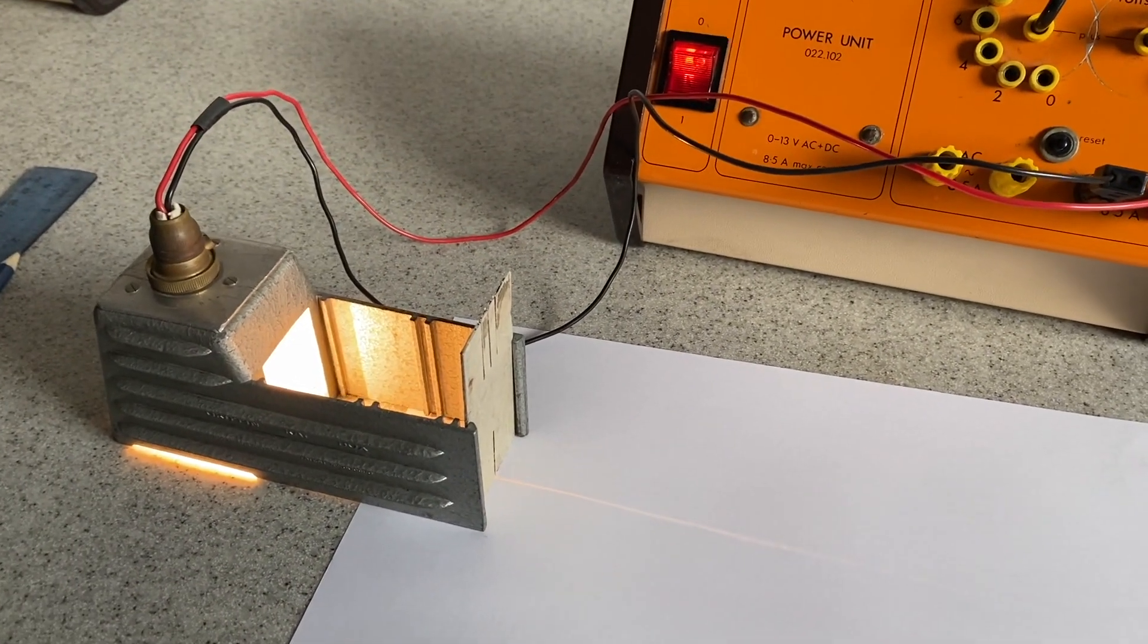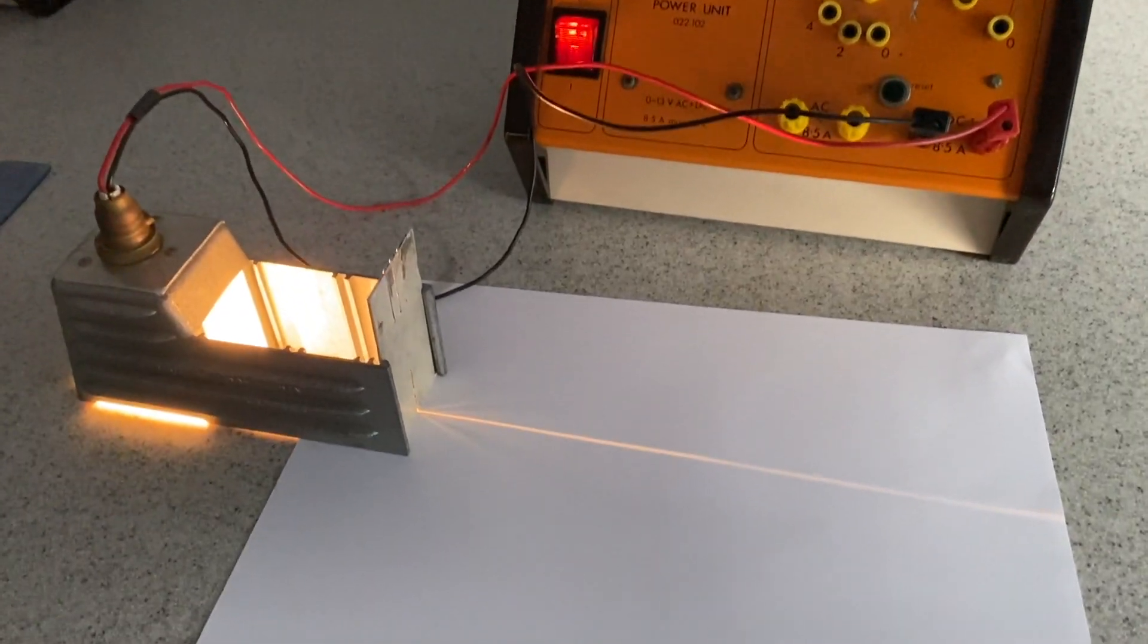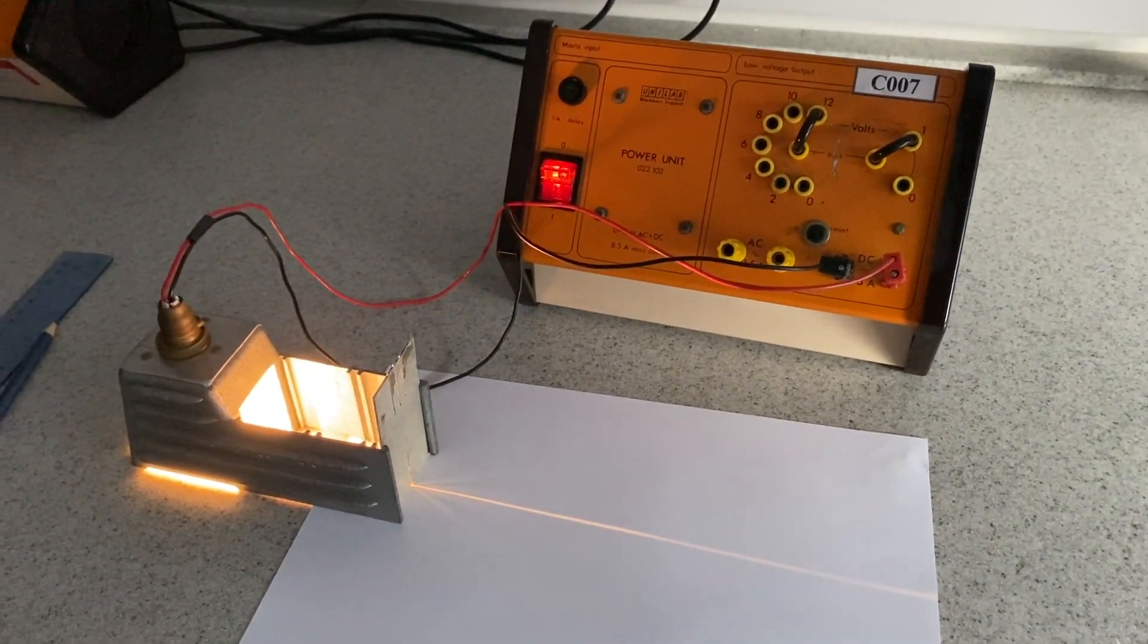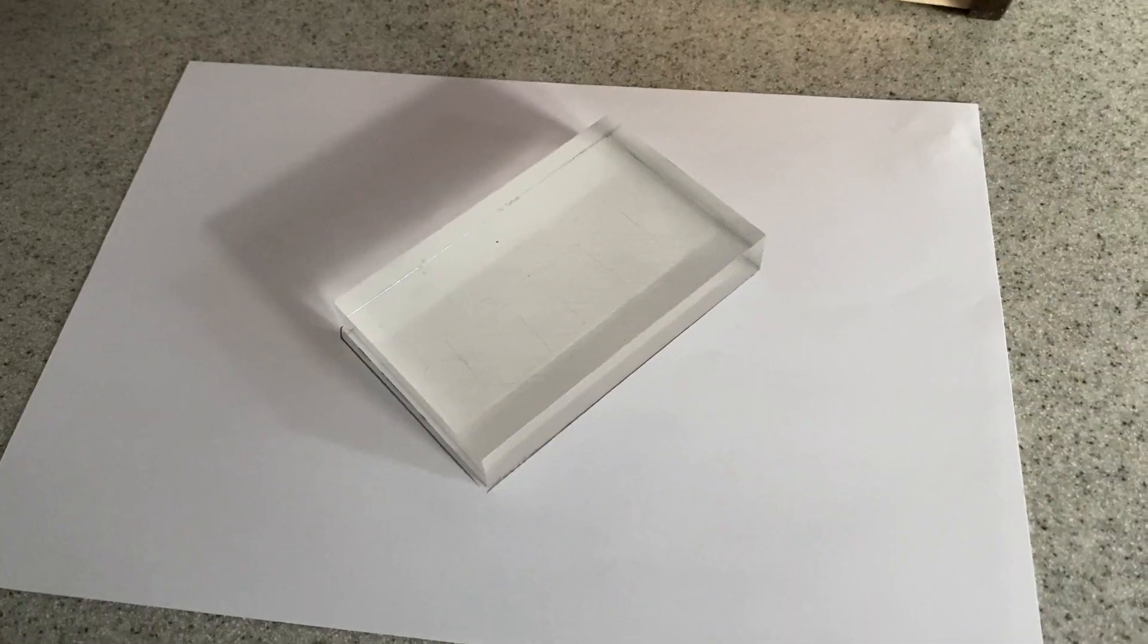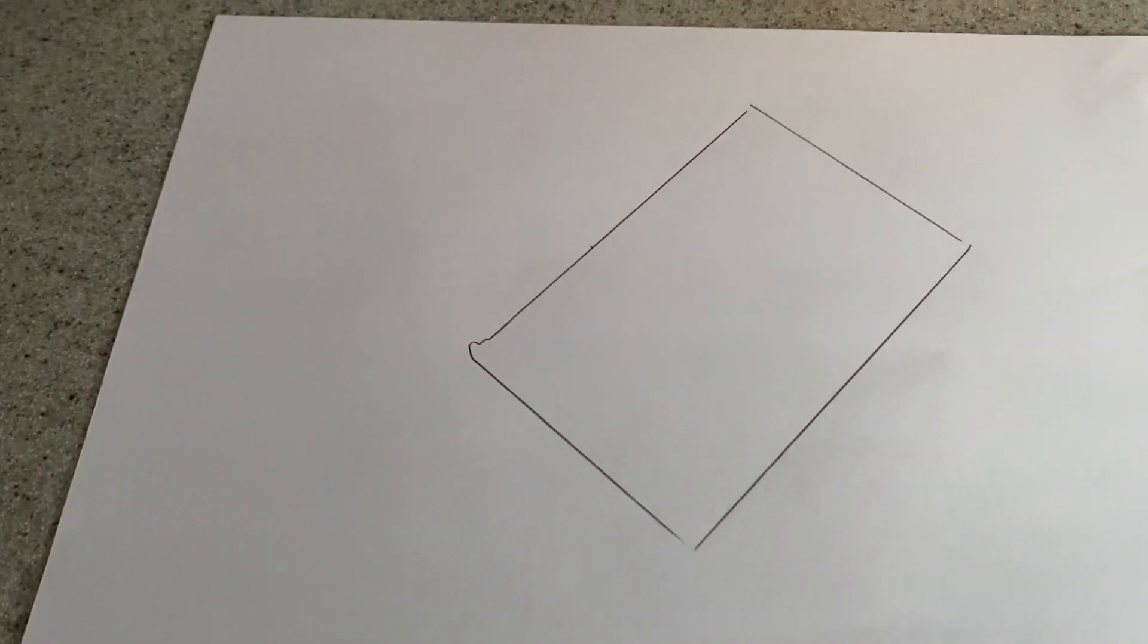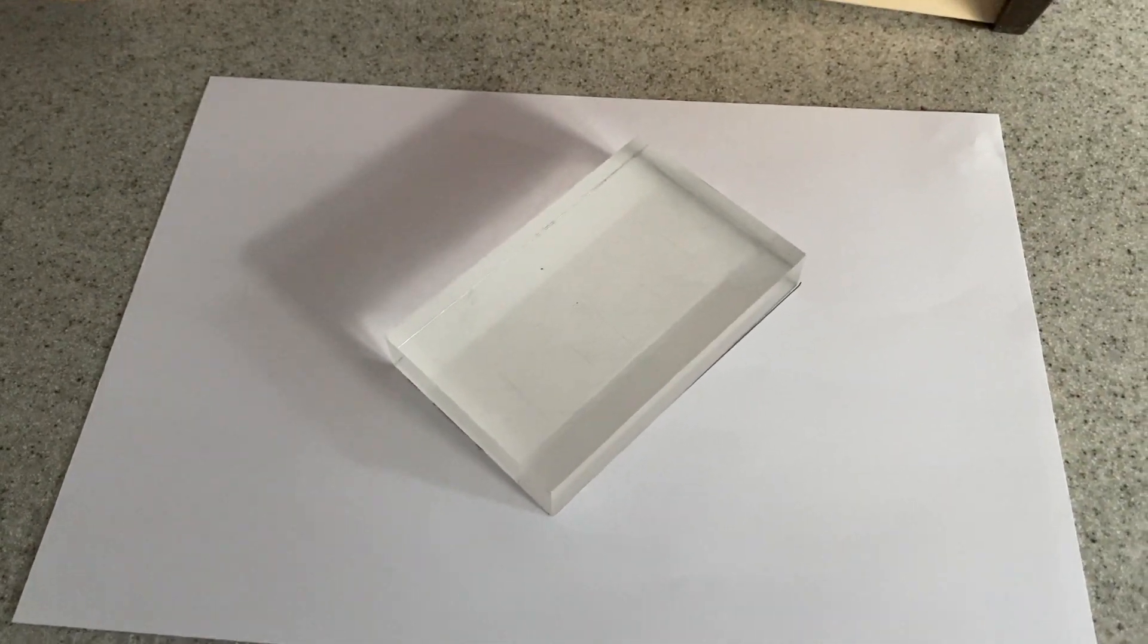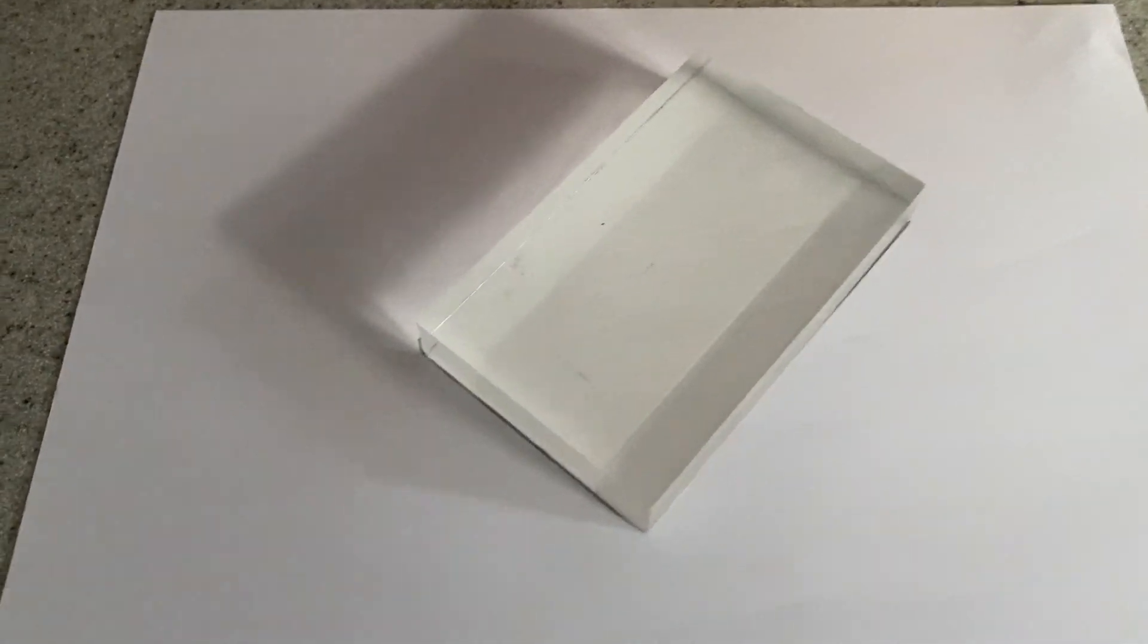And it may be easier if we turn the lights down a wee bit. I've reduced the light level in the room and we can see that beam a little bit better. The first experiment is we're going to get a rectangular block and we're going to draw around it on a sheet of paper. There's my rectangular block and I've just taken a pencil and I've traced round it on a sheet of paper.